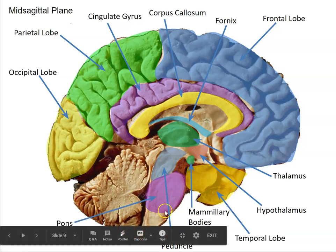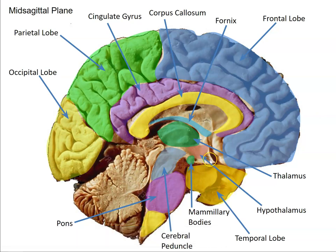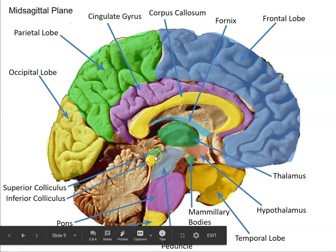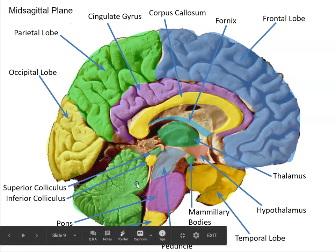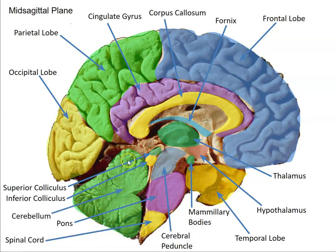Here we have the pons again — there's the bridge. And then the spinal cord is down here. Up here along the midline would be the optic chiasm, though it's not labeled because it's not terribly distinct on this specimen. Here we have the superior and inferior colliculi. The superior colliculus is important for controlling certain kinds of eye movements. The inferior colliculus is an important relay station for incoming auditory information — information about sounds.